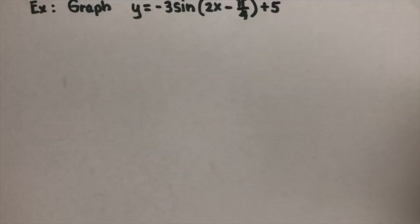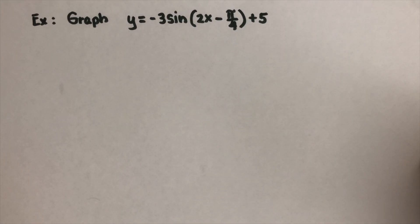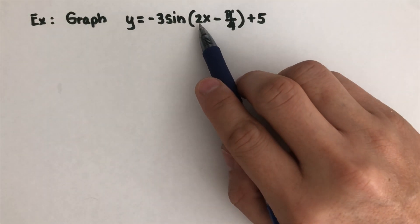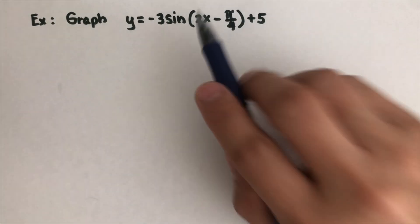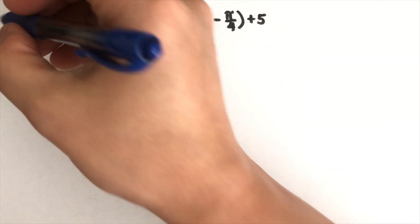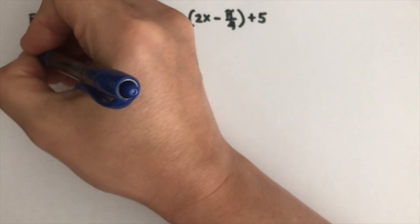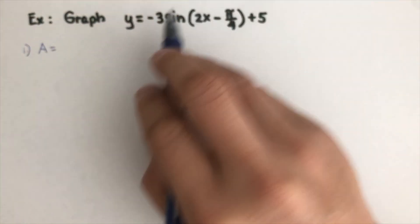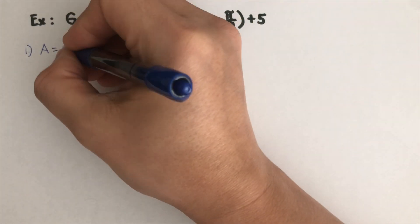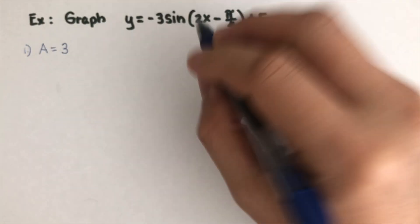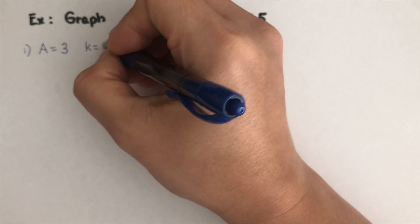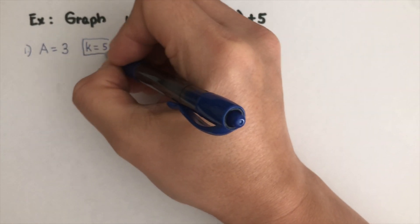Let's have this first example. The reason this is the second part is because the first part doesn't have an 'a' value — for the second part, it has an 'a'. So let's go over the steps. Step one is to determine the amplitude. Amplitude is the absolute value of 'a', and that is three. We also have a midline where k equals five.